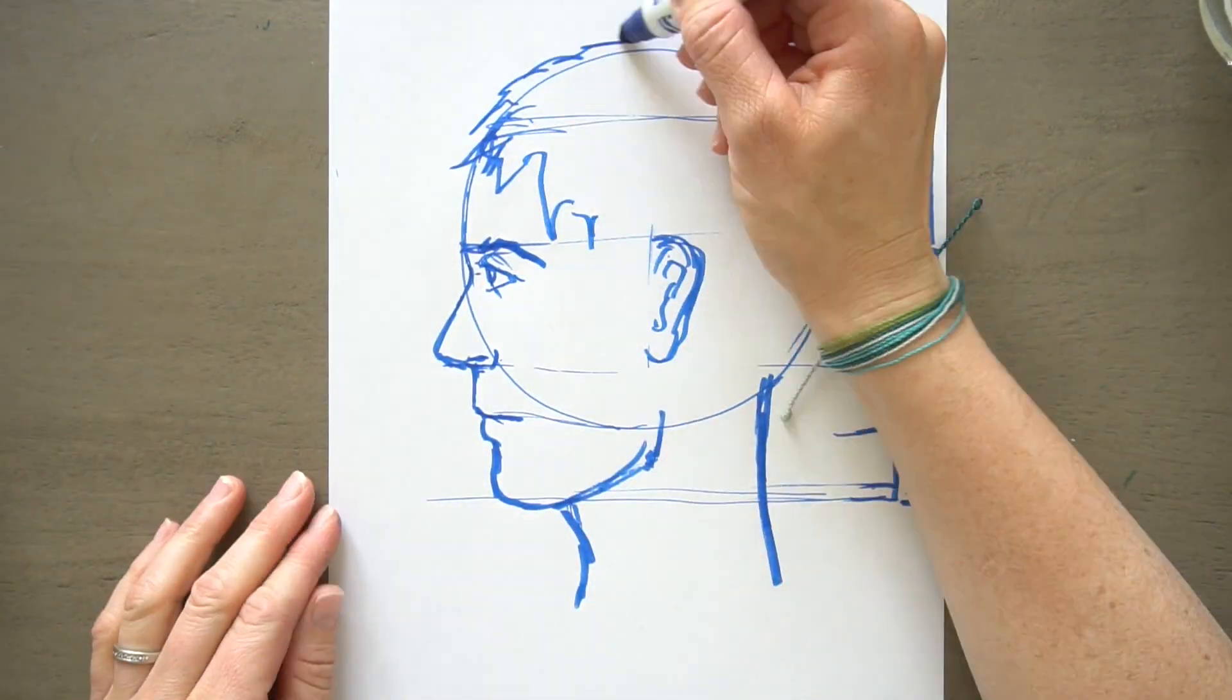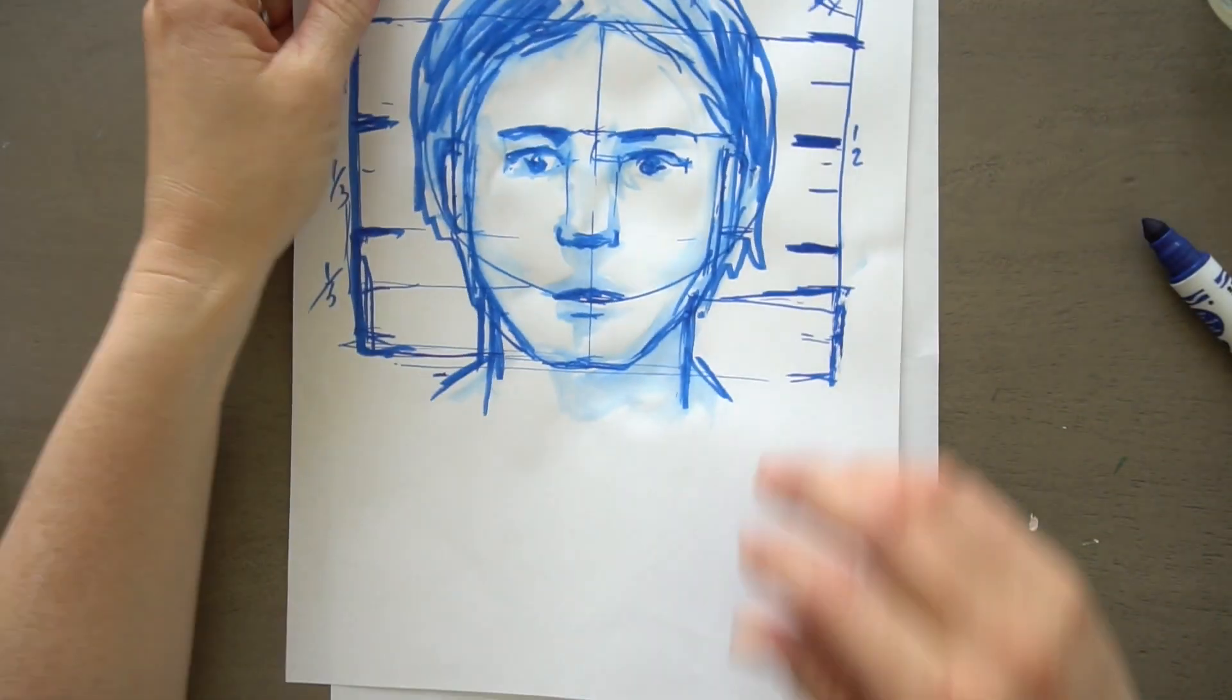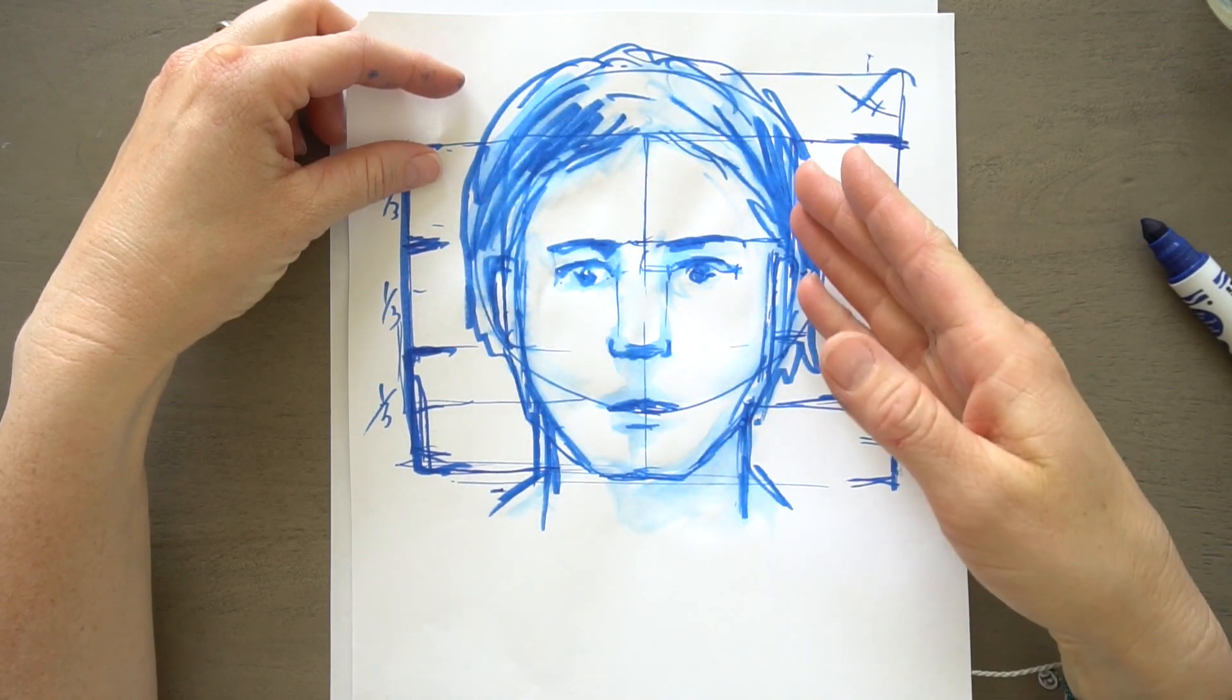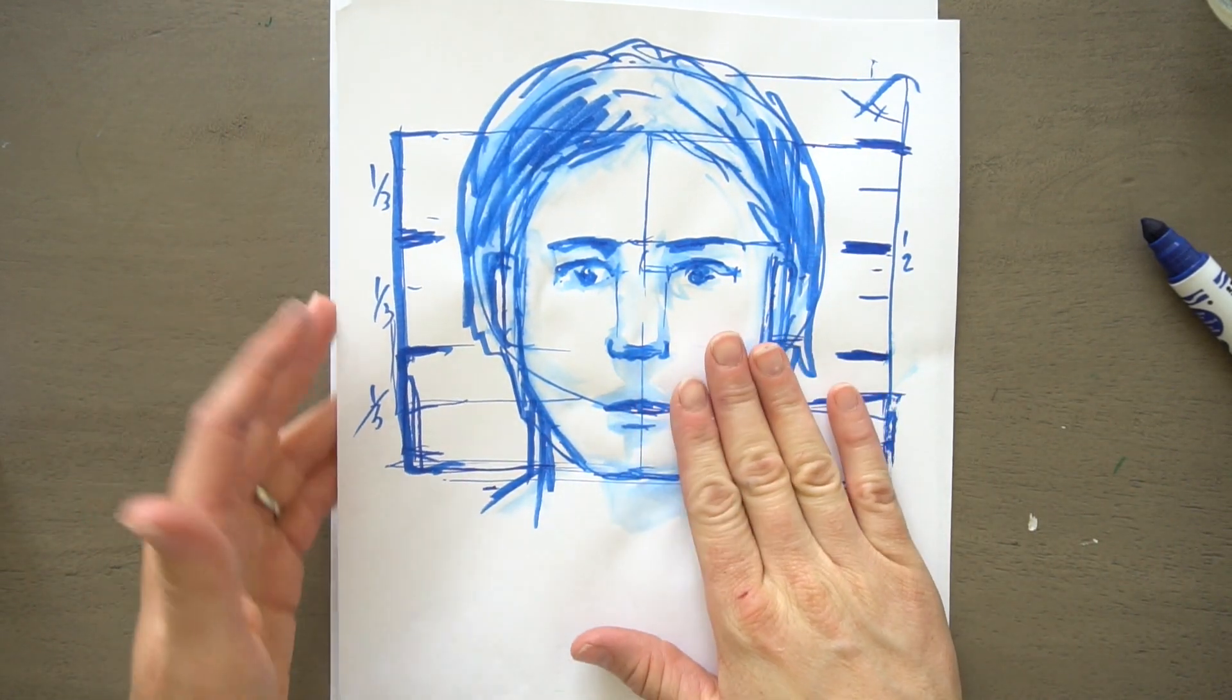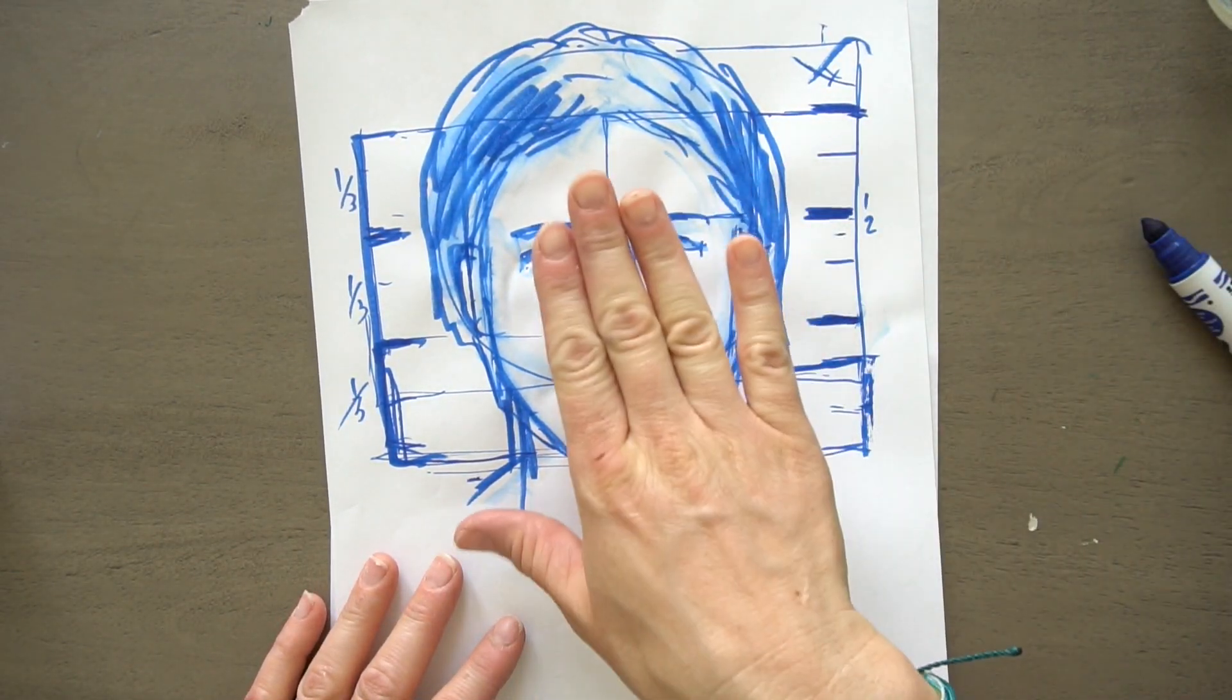Hi, welcome to Mr. Otter Studio. Today we are going to be drawing the face from the side. So yesterday we went over drawing the proportions of the face from the front, and today we're going to be drawing a person looking that way. We're going to be using the same proportions, we're just going to turn the face so that it's looking in a different direction.